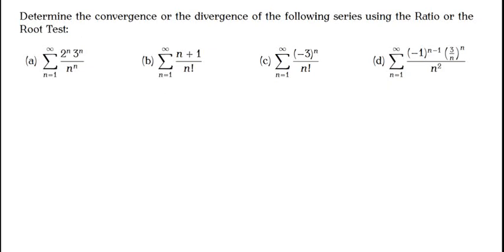We'll look at some more examples under infinite series. These examples require us to either apply the ratio test or the root test. The question reads: determine the convergence or divergence of the following series using the ratio or the root test. I've previously covered the theory for the root test and the ratio test — check the links in the description below if you want the introduction and theory. In this video, I'm just going to solve the examples.